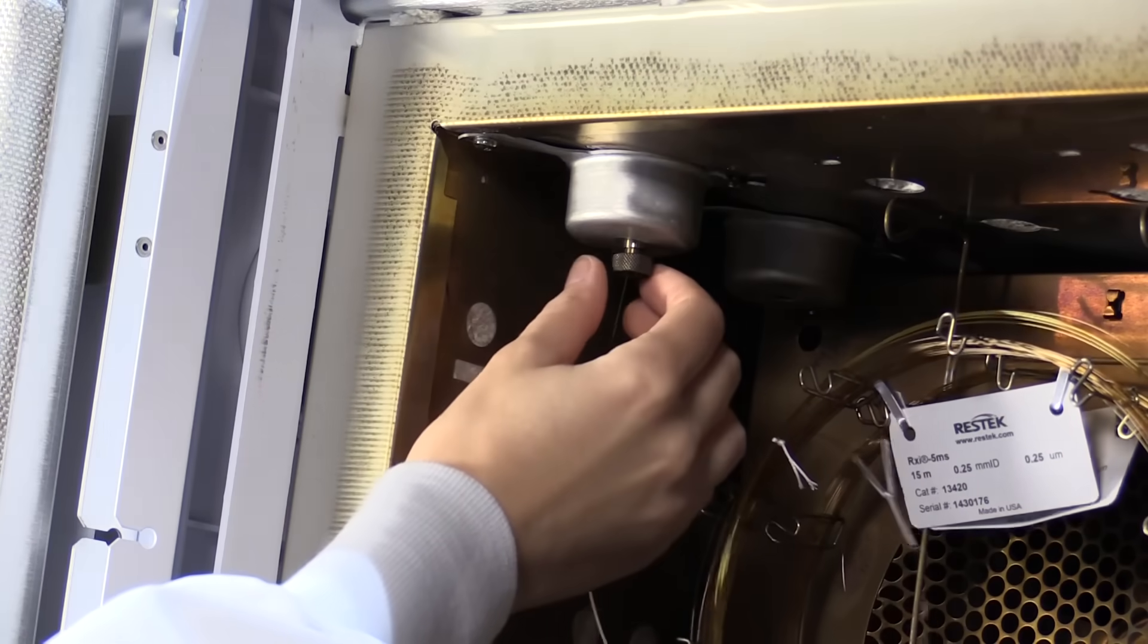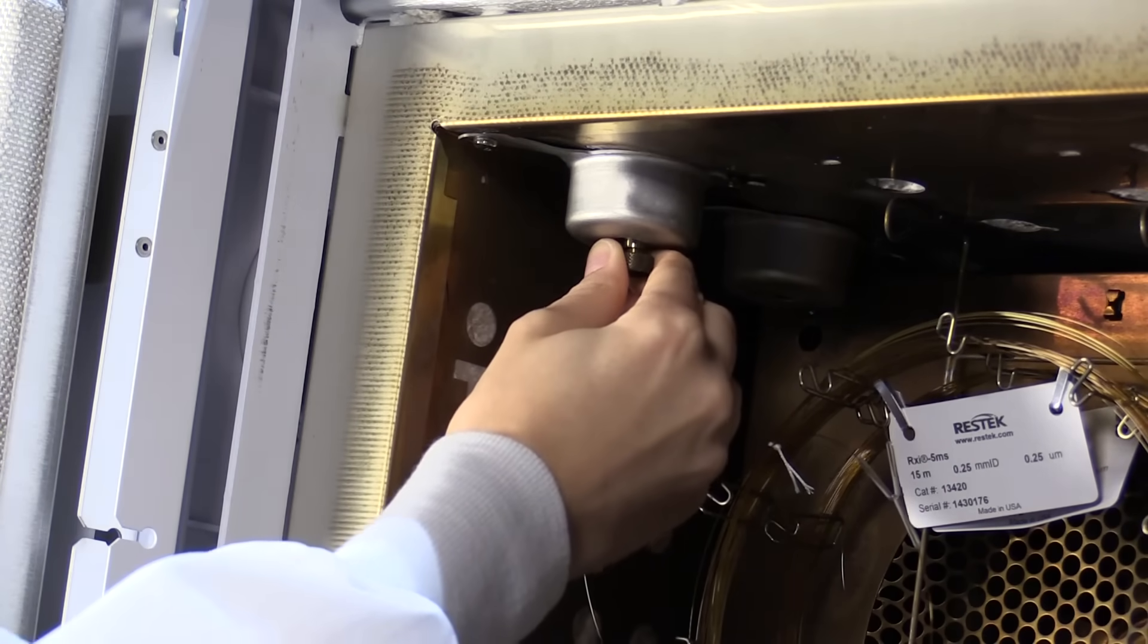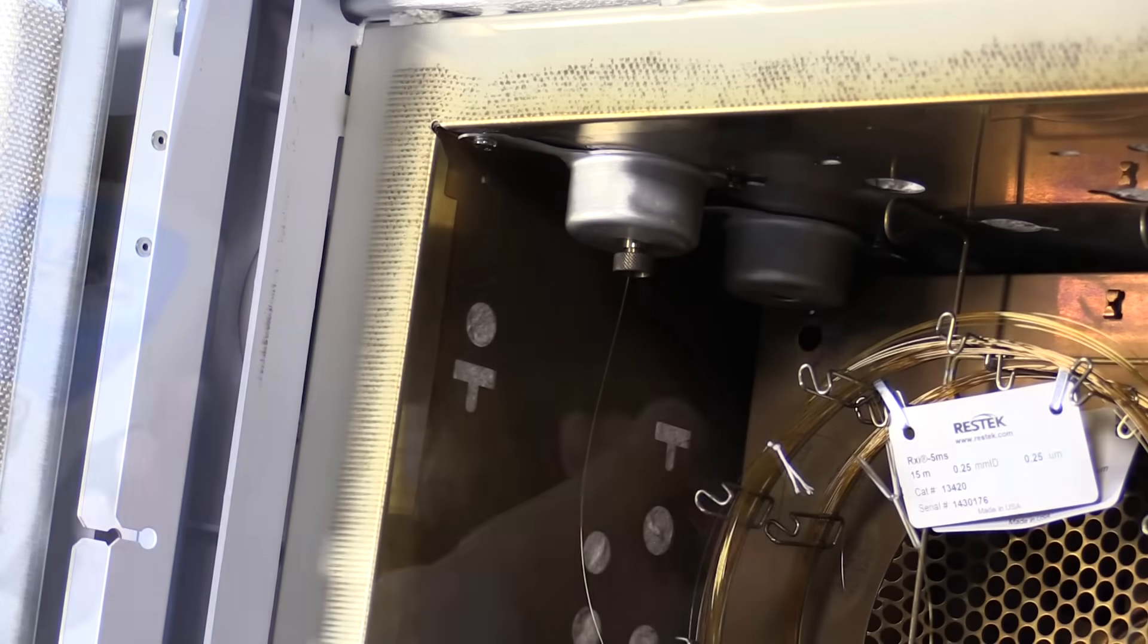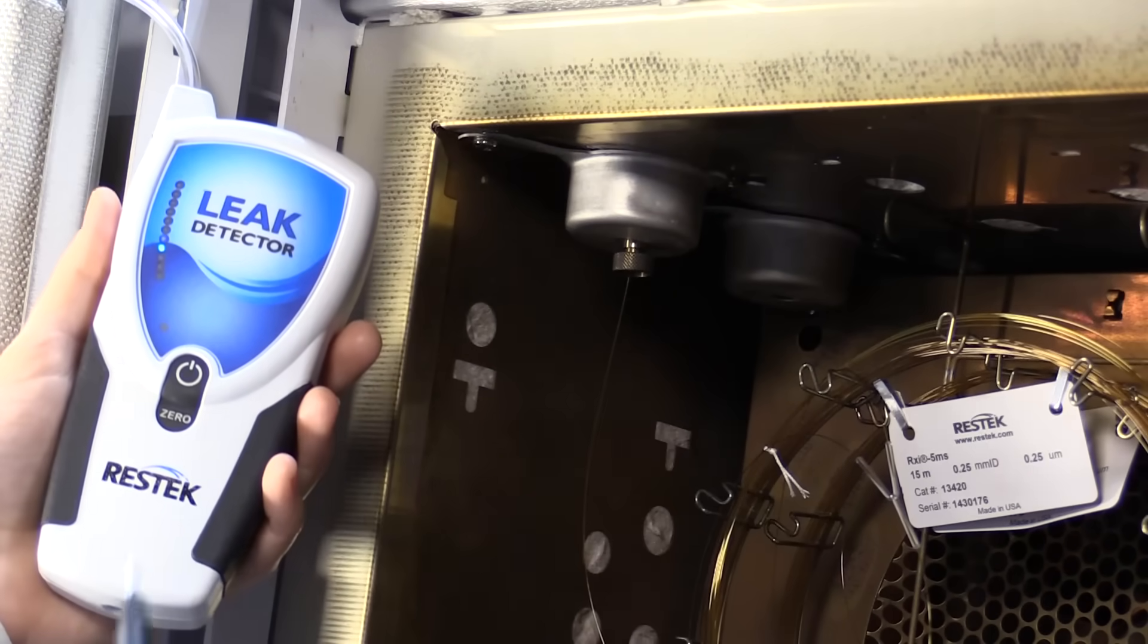If you encounter a leak near the column nut, reducing nut, or other threaded connection, first attempt to fully tighten the nut. After the fitting has been tightened, recheck it to confirm that the leak has been eliminated.